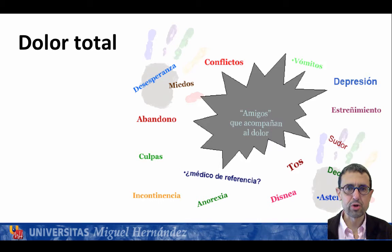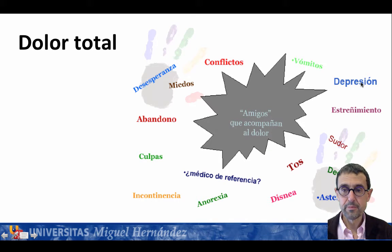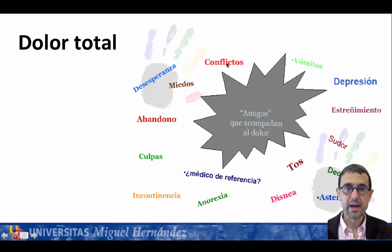El concepto del dolor total en el paciente paliativo contempla que el dolor viene acompañado de miedos, abandono, desesperanza, conflictos; también de vómitos, tos, disnea, sudoración, estreñimiento, depresión, cansancio, falta de apetito y problemas con el ambiente. Esto es el concepto del dolor total en el paciente paliativo, con sus cuatro vertientes: física, social, emocional y espiritual.